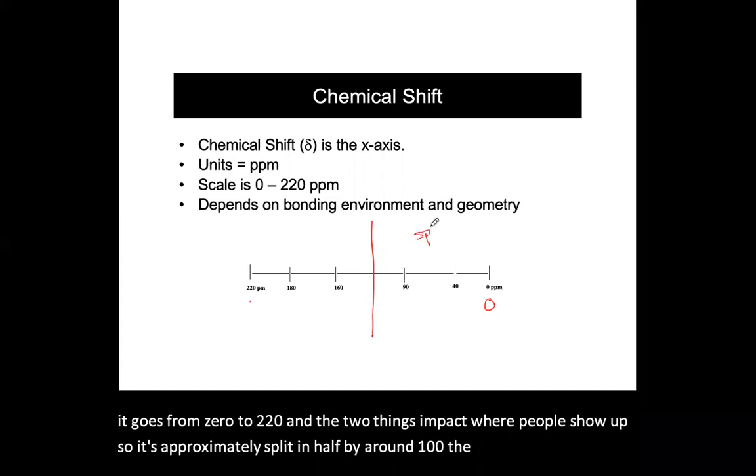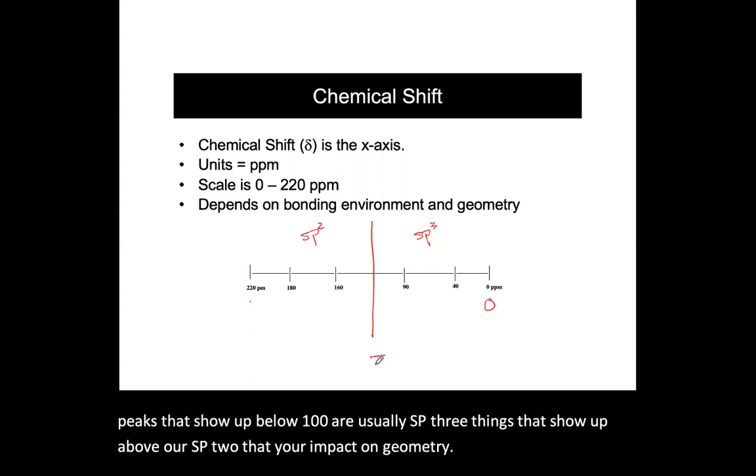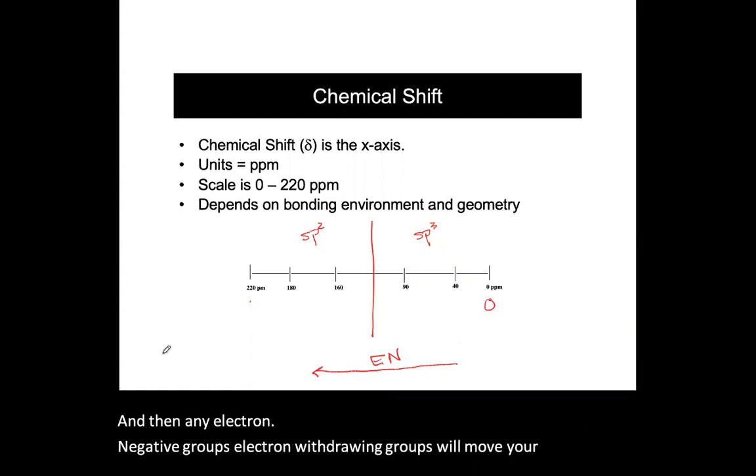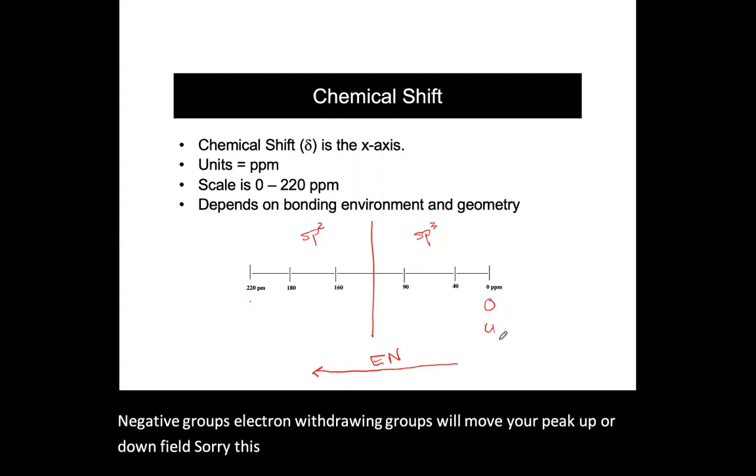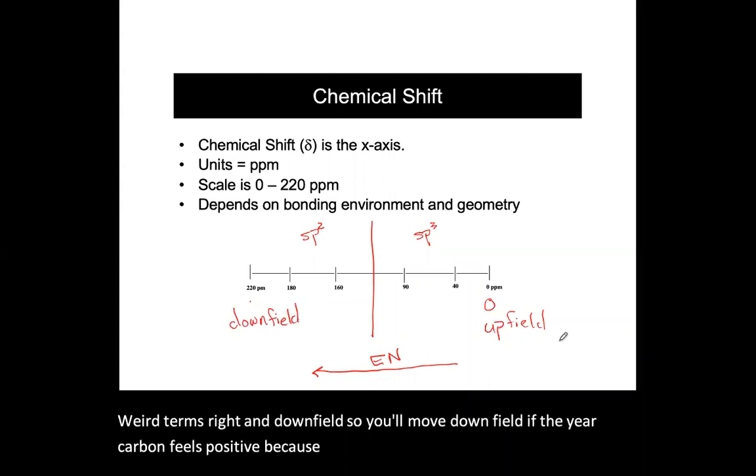So it's approximately split in half by around 100. The things below 100, peaks that show up below 100, are usually sp3. Things that show up above are sp2, that's your impact on geometry. And then any electron negative groups, electron withdrawing groups will move your peak upfield, or downfield. Some weird terms, right? Upfield and downfield. So you'll move downfield if the carbon feels positive because there's something pulling electrons away from it.